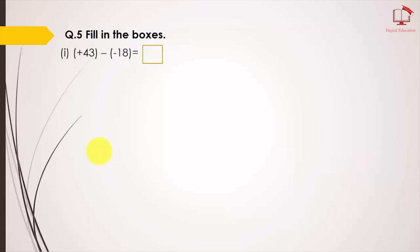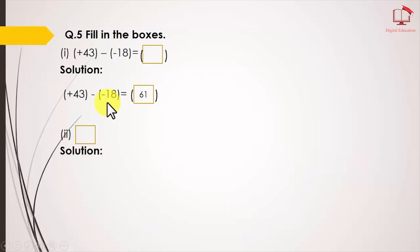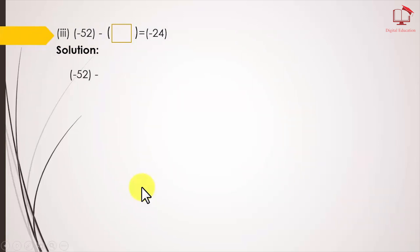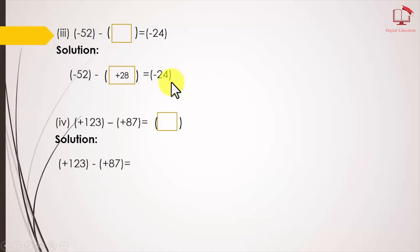Question number 5: Fill in the boxes with the right answer. Part 1: plus minus minus gives plus, so 23 plus 18 equals 61. Part 2: The missing integer is minus 20, because minus 11 plus minus 20 equals minus 31. Part 3: The answer is 28 with a minus sign; plus minus minus minus gives plus 24. Part 4: The missing integer is positive; minus 87 plus positive 123 gives 36 after subtraction.